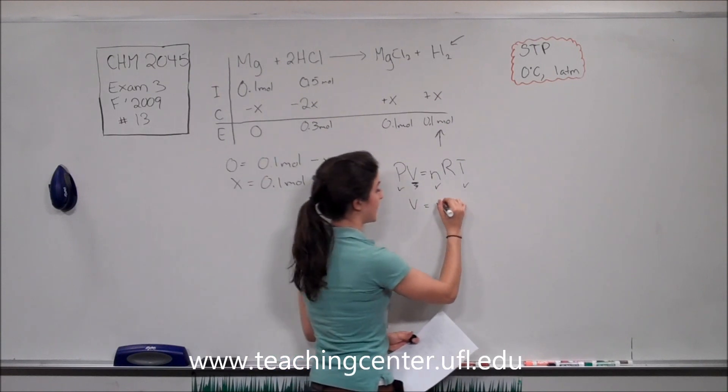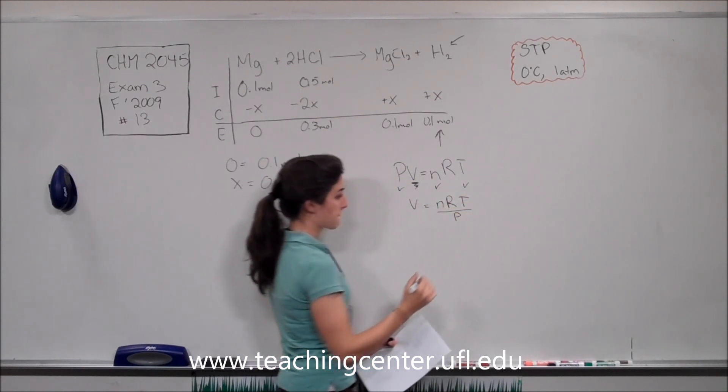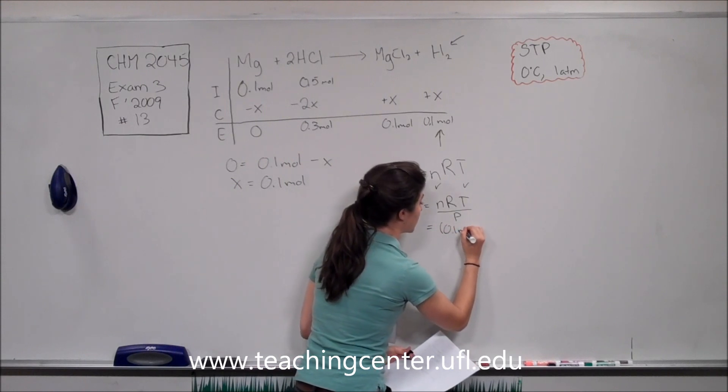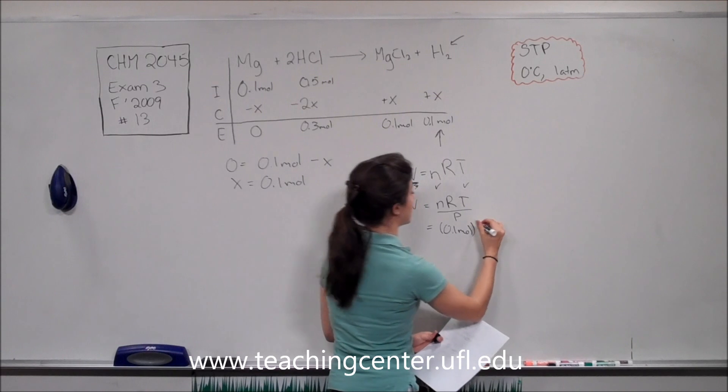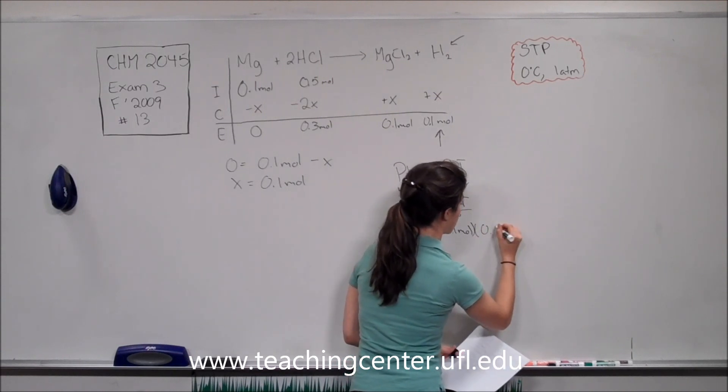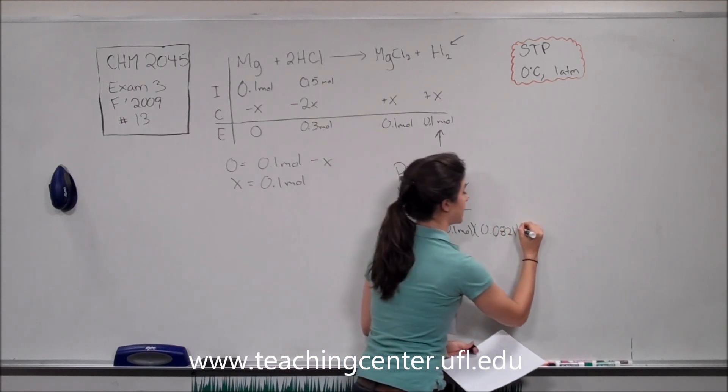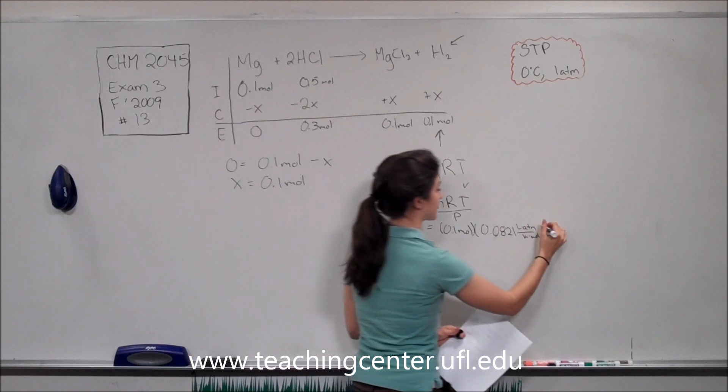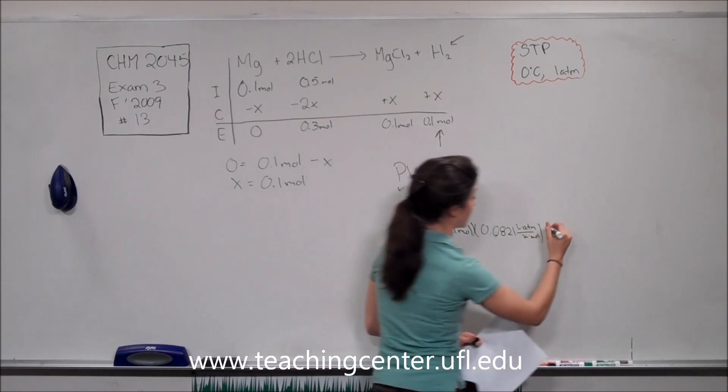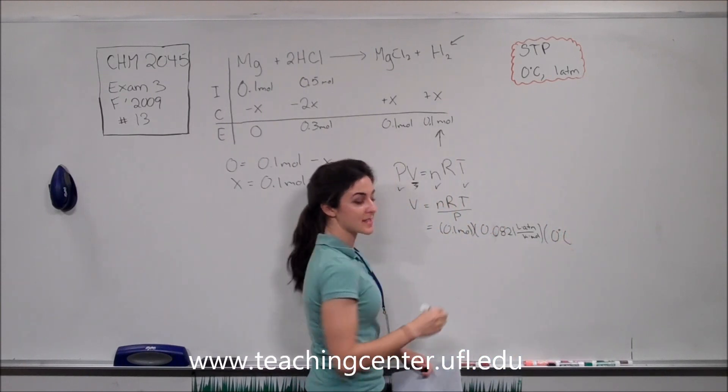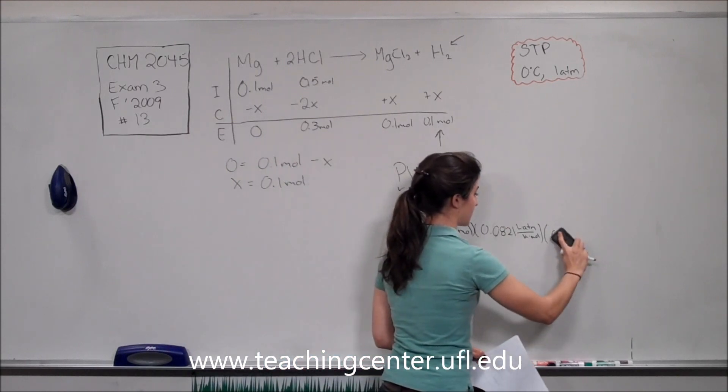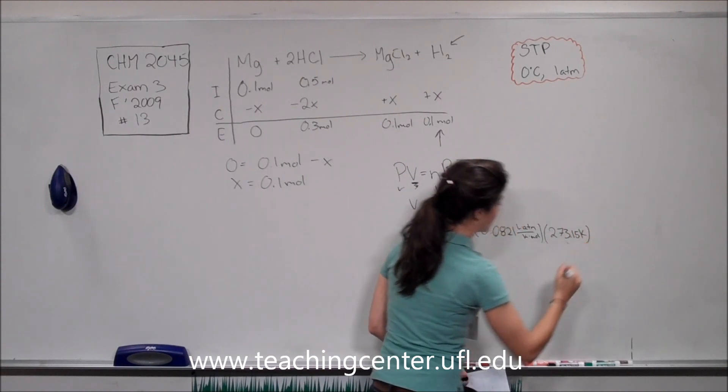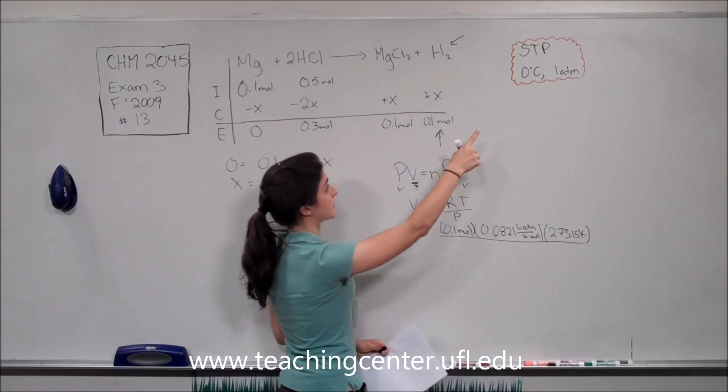So pulling volume to one side, we have nRT over pressure, and plugging in our numbers, we have 0.1 moles times 0.0821 liters times atmospheres over Kelvin times mole, and then times temperature, which is 0 degrees Celsius. But I can't plug in 0 degrees Celsius here, this needs to be in Kelvin. That's going to be 273.15 Kelvin. All of this divided by pressure, which is one atmosphere.